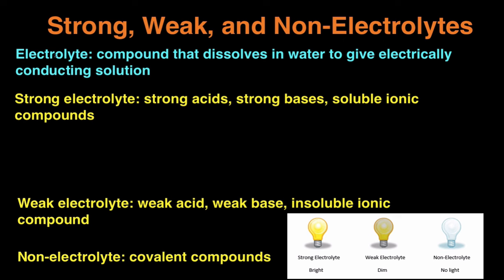Simply said, an electrolyte is a compound that, when it dissolves in water, it produces a solution that conducts electricity. And the reason why a solution conducts electricity is because they contain ions.